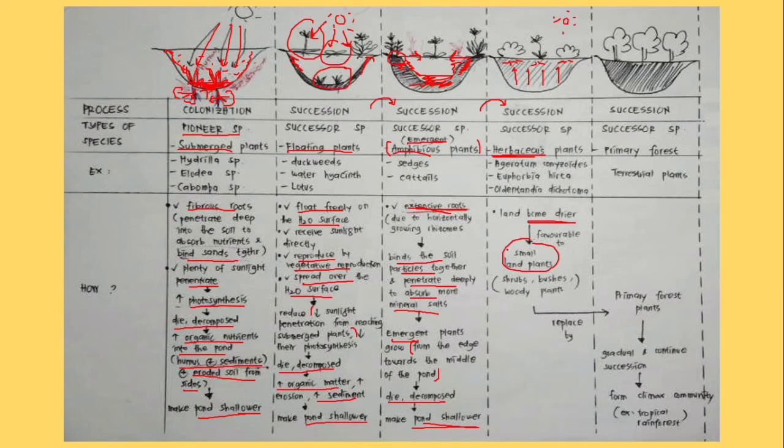And this herbaceous plant will be replaced by small land plants such as shrubs, bushes and woody plant. And this succession process will keep repeated where the small land plants, shrubs, bushes, woody plants will be replaced by the terrestrial plants with woody, woody stems and harder or stronger stems and roots by succession process.